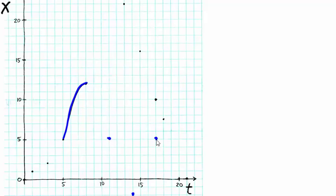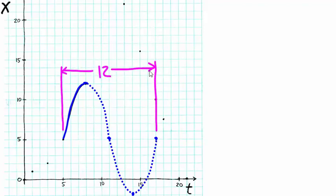With a dashed curve, I'm going to complete one full period of the sinusoid. We see that the period measures 12 units, the amplitude measures 7 units, and the sinusoidal axis is 5 units above the t-axis.